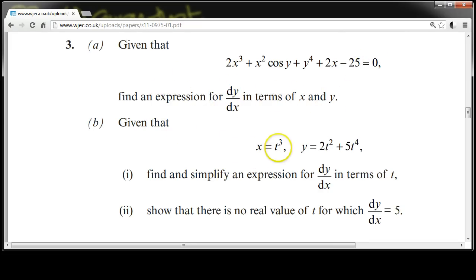Given that x equals t cubed and y equals 2t squared plus 5t to the 4, find and simplify an expression for dy/dx in terms of t.